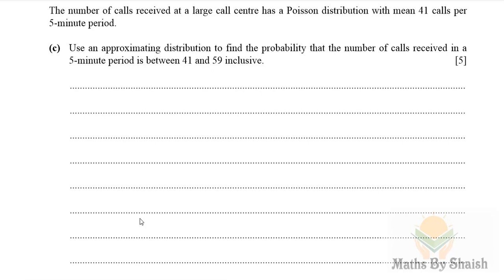Now here's some information for the C part. The number of calls received at a large call center has a Poisson distribution with mean 41 calls per five minute period.